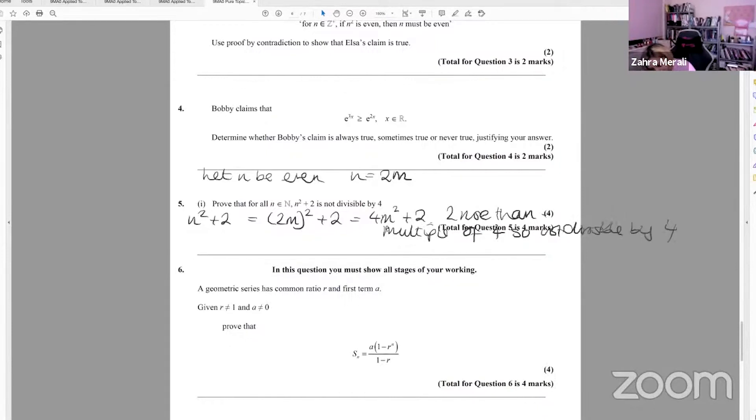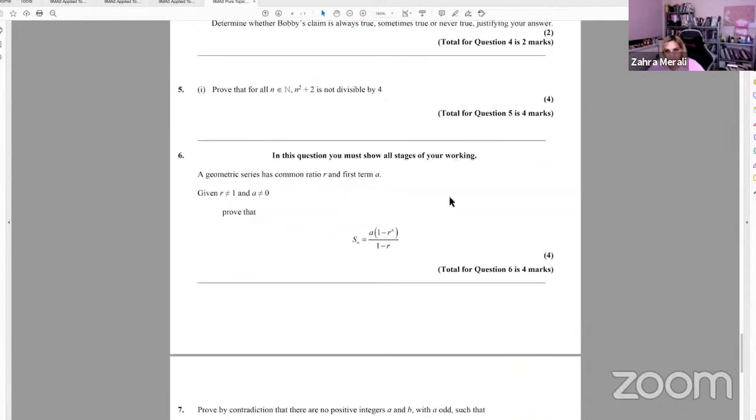And if n is odd, you'll get n equals 2m plus 1. So 2m squared is going to give you 4m plus 2, 4m squared plus 4m plus 1 plus 2, which is 3 more than a multiple of 4. So it's not divisible by 4. So that would be a way to do it. And then you'd say, therefore, all natural numbers are not divisible.